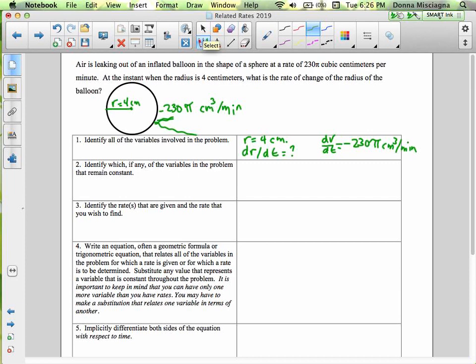Identify which, if any, of the variables in the problem remain constant. That'll be important, because if we have something that remains constant, its derivative is zero. Well, the volume is changing, and as the volume is changing, so is the radius, so there are none. So we can just put an N/A, not applicable. Nothing is going to stay the same.